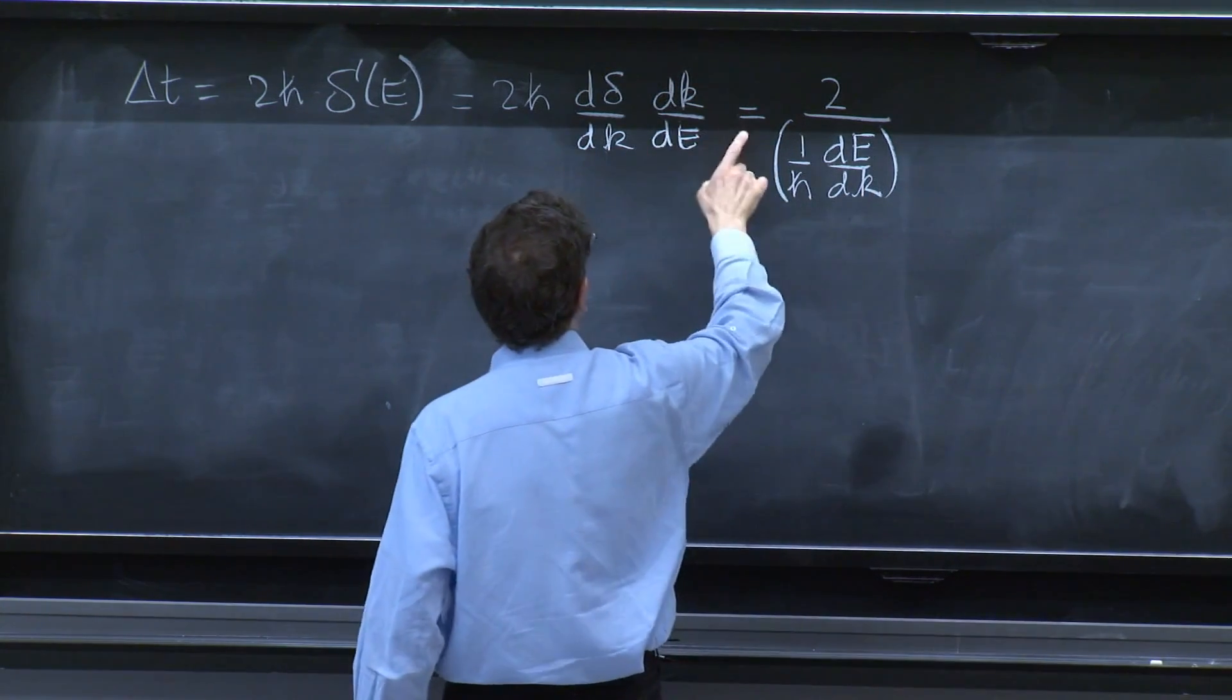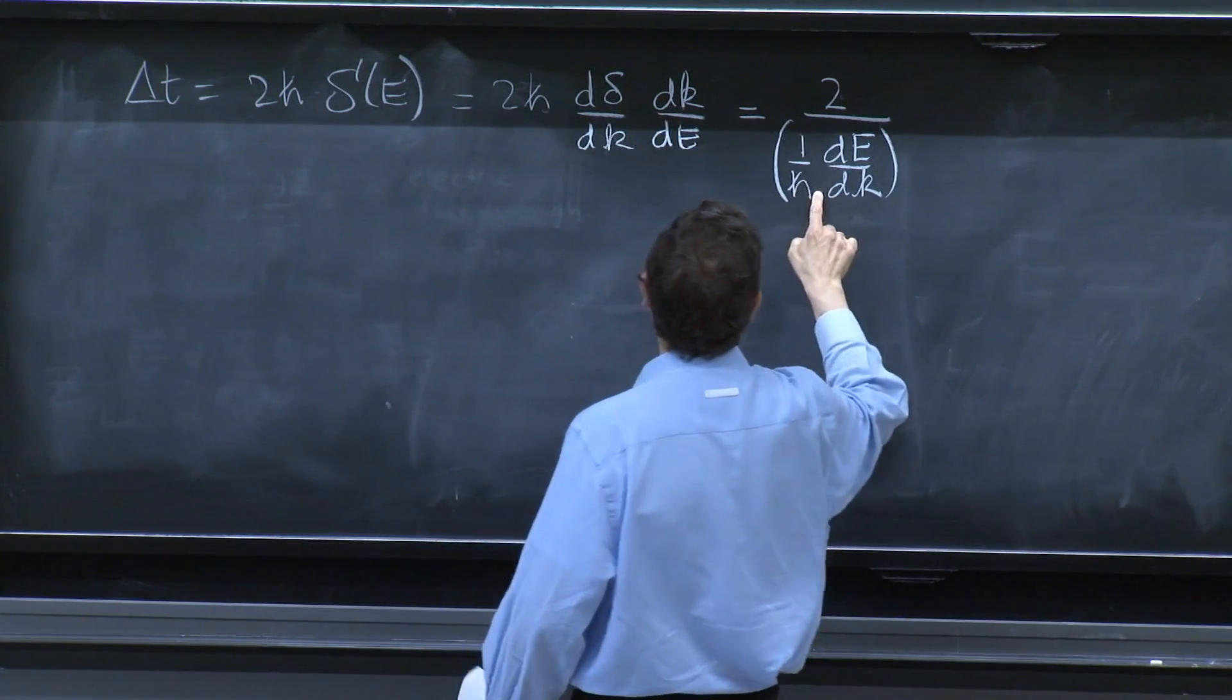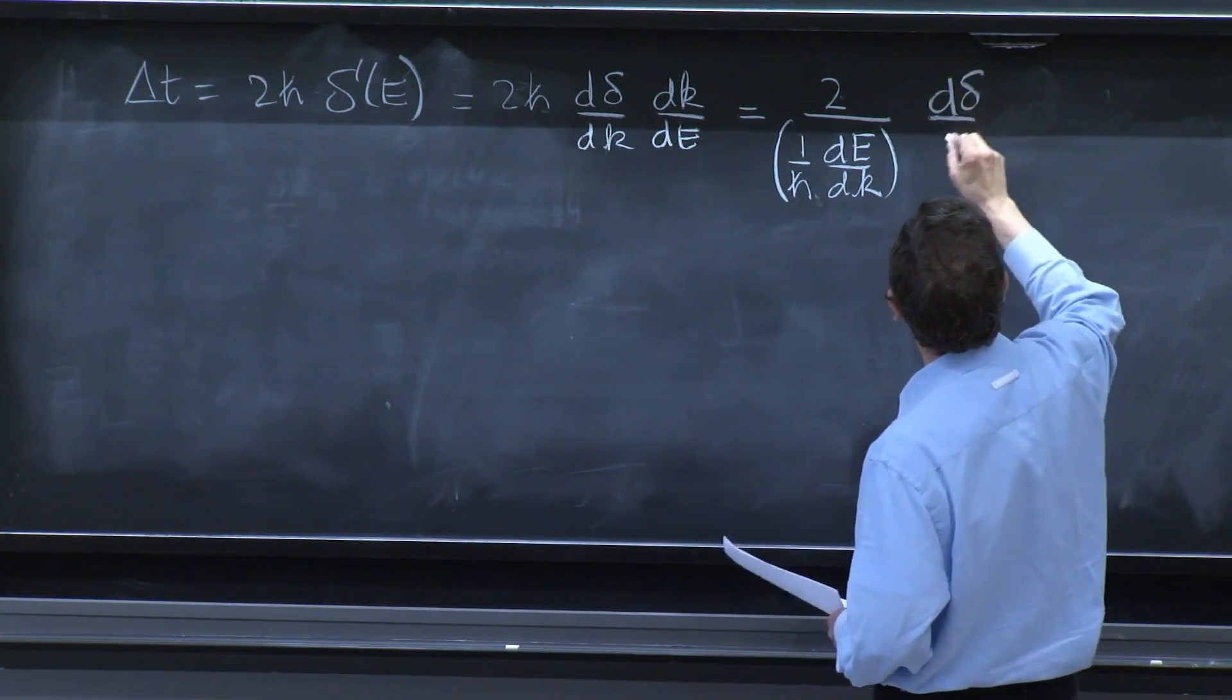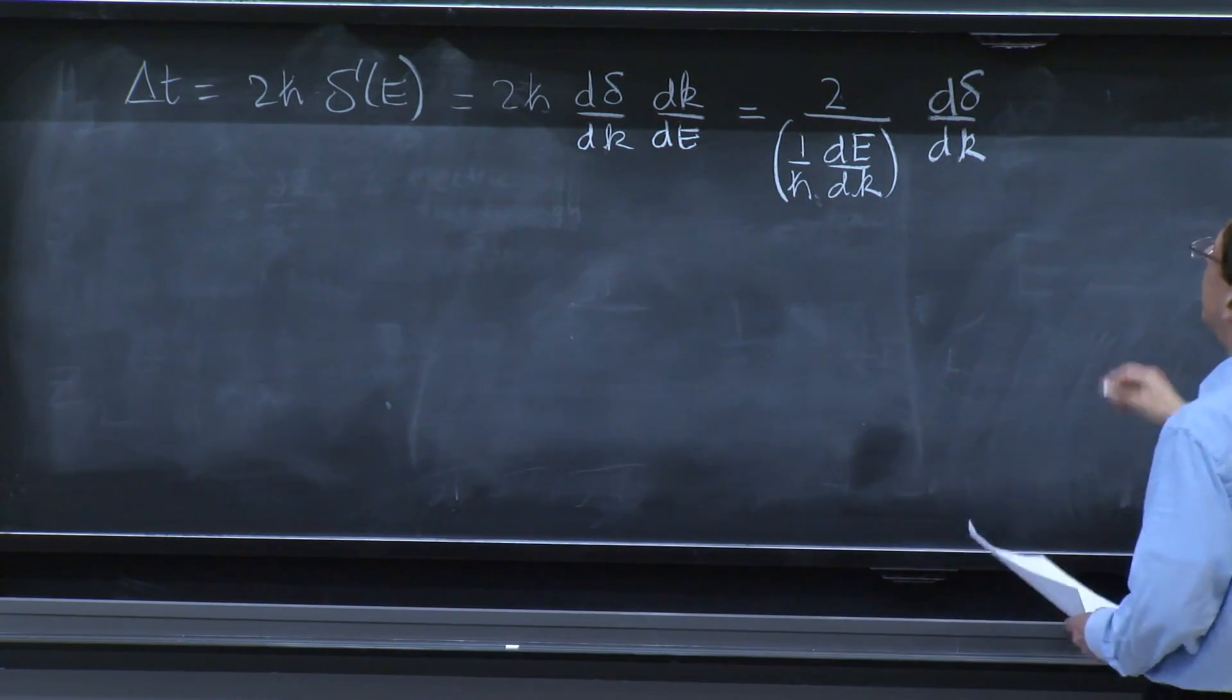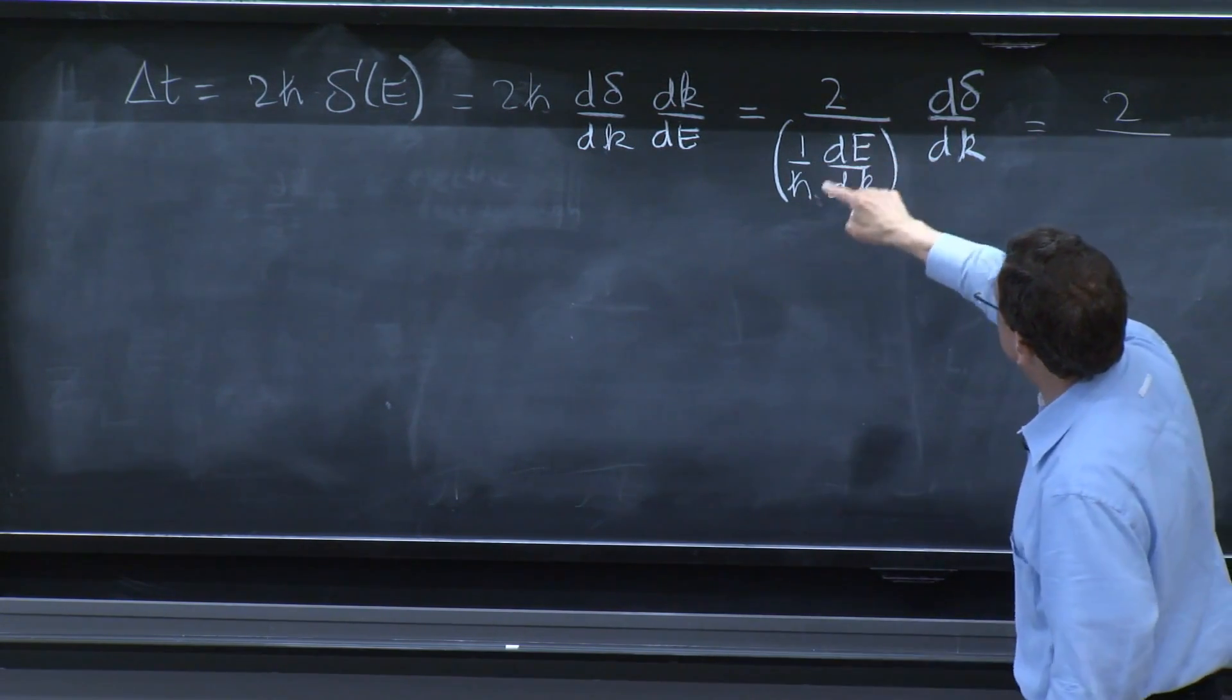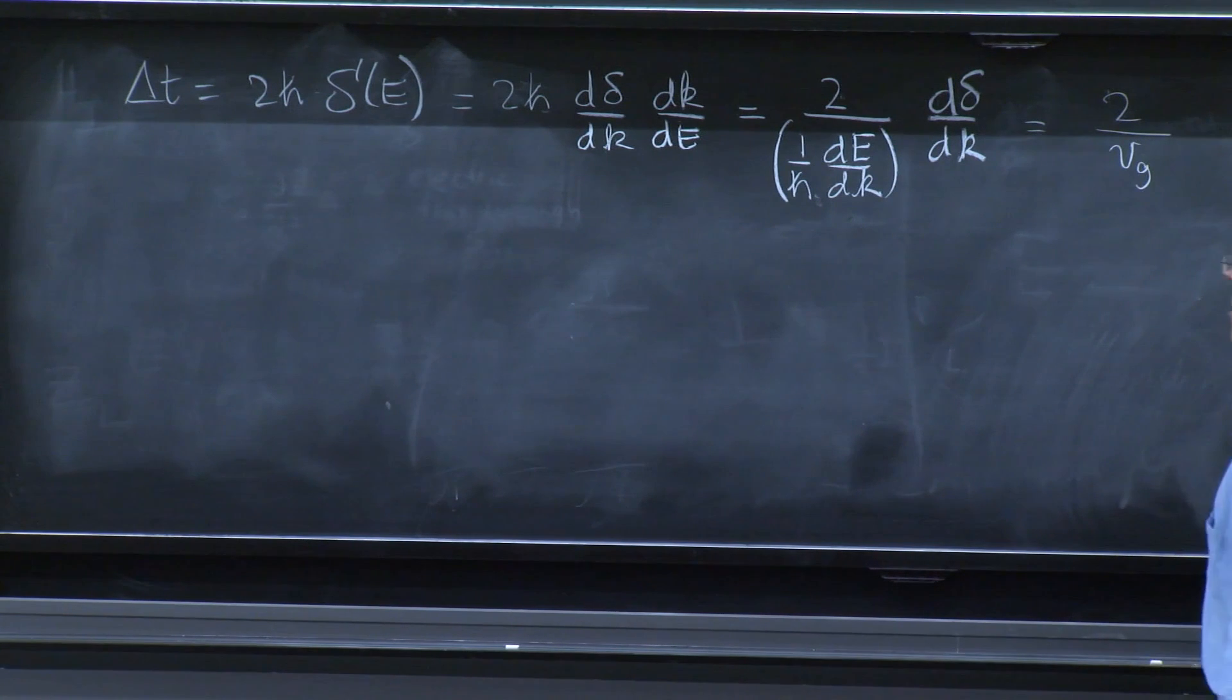And then you have this 2 that I left here. The h bar went all the way down. And I have d delta dk. And here, we recognize that this is 2. And this is nothing else than the group velocity we were talking before.